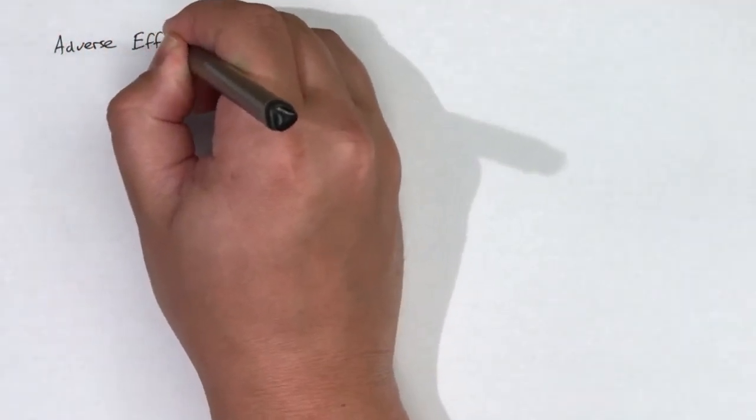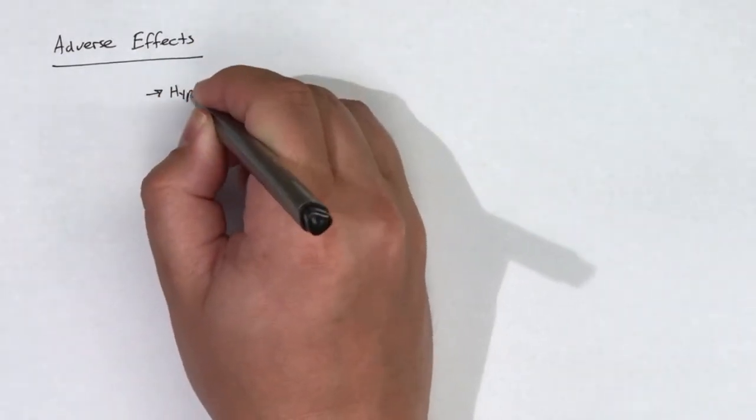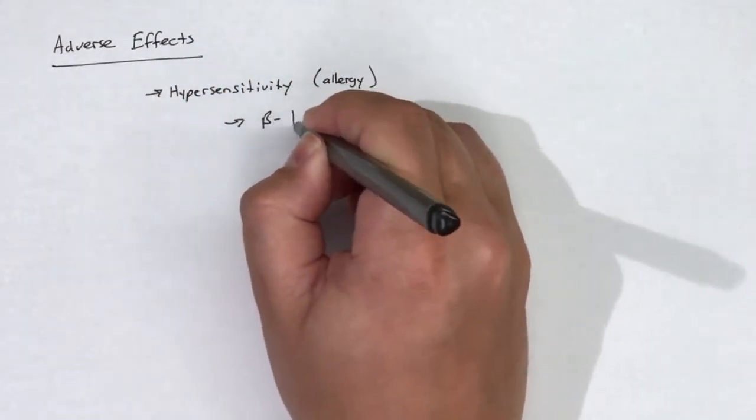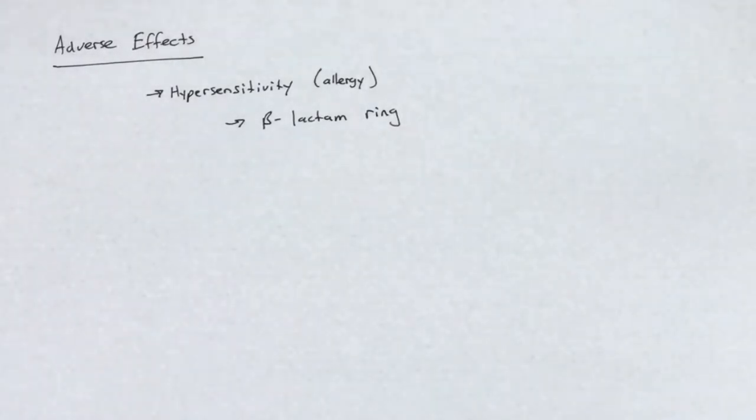The adverse effects of cefepime are similar to the adverse effects described in the cephalosporin overview video. Hypersensitivity to the beta-lactam ring remains the most common adverse effect.